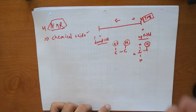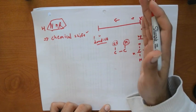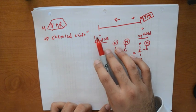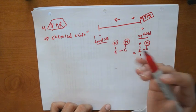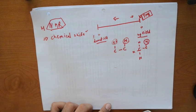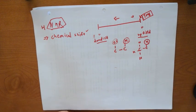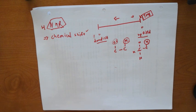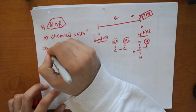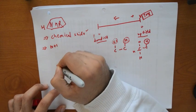The more deshielded or the more electronegative the environment, the further left the signal appears. Less electronegative means further right. That's one important rule to understand. The next concept is something called the N plus one rule.